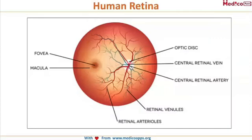This is what you will see when you try to look at the eye through the pupil with a direct ophthalmoscope or with a 90D lens. The most obvious structure you will see is the optic disc — it is nothing but the point of entrance of the optic nerve into the eye.